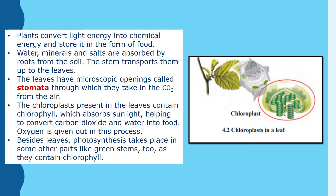Plants convert light energy into chemical energy to store it in the form of food. Water, minerals, and salts are absorbed by roots from the soil. The stem transports them up to the leaves. The leaves have microscopic openings called stomata, through which carbon dioxide is absorbed from the air.